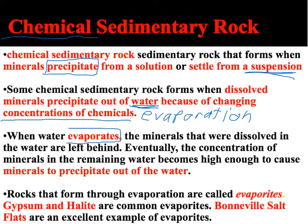Eventually, the minerals left in the water become so concentrated that the water cannot hold that many minerals, and they precipitate or fall out — kind of like rain precipitates from clouds when there's too much water in the atmosphere. If there are too many dissolved minerals in water, as the water evaporates, those minerals precipitate and fall to the bottom.